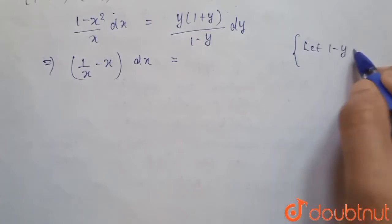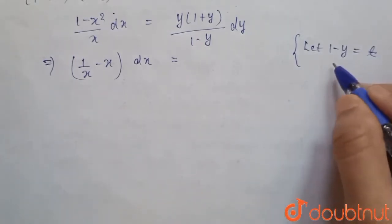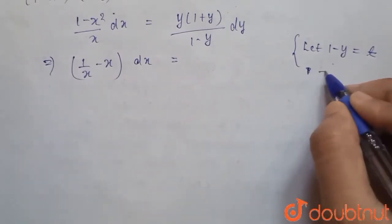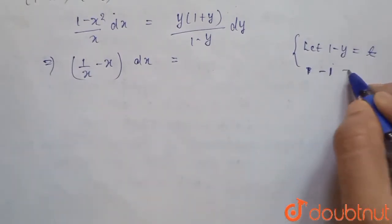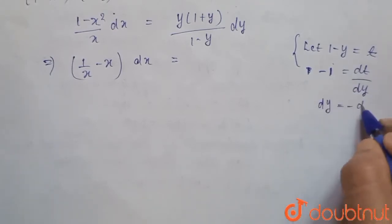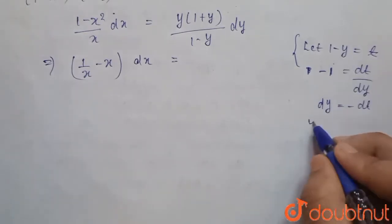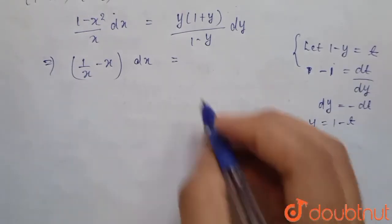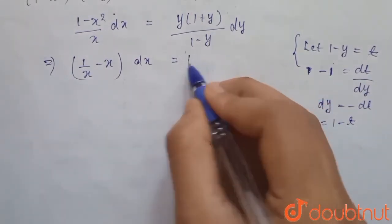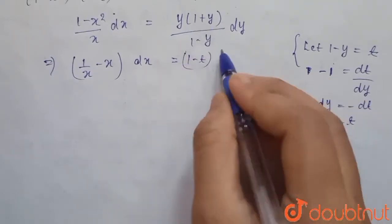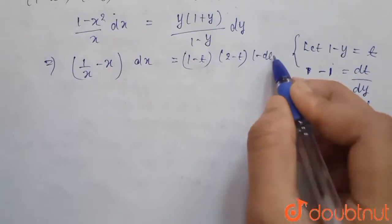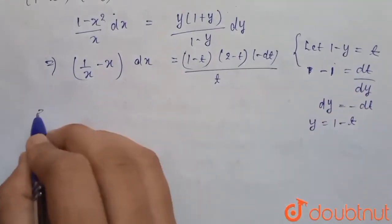Let 1 - y = t. Differentiating with respect to y, we get -1 = dt/dy, so dy = -dt. From this we get y = 1 - t. Substituting: y is (1 - t), y + 1 becomes (2 - t), and dy is -dt, all over t.